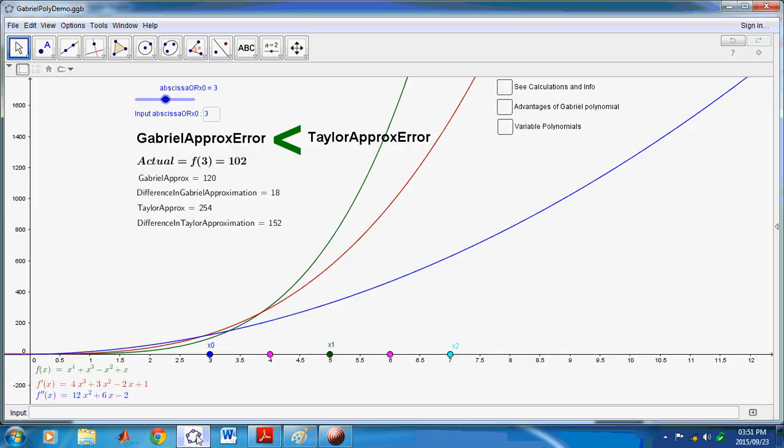Now, in the applet over here, I actually show you how these mu's here, which are the pink dots, these are estimated mu's, not true mu's, can be used together with the second order mu, which you don't see here because x1 is one of the coordinates. But, they can be used to estimate the polynomial. So, f3 is 102. And, as we move this green point closer and closer, we see that the Gabriel approximation and the Taylor approximation both get closer to 102, with the Gabriel approximation error being far less than the Taylor approximation error, as you can see over here.